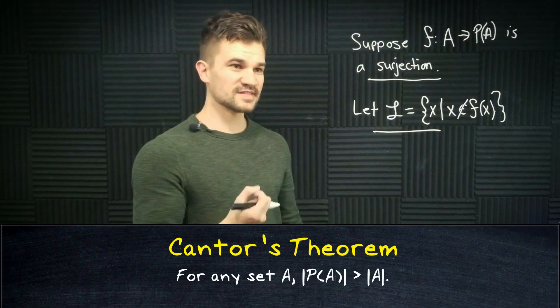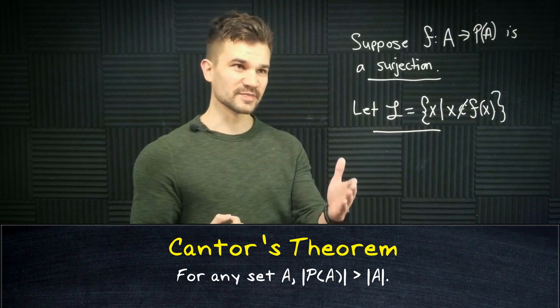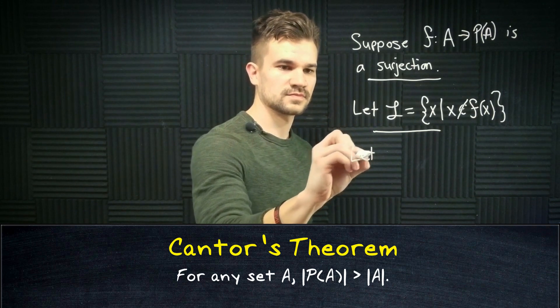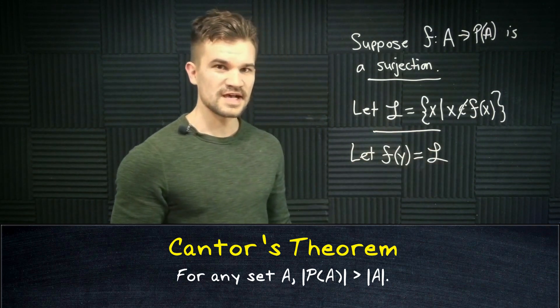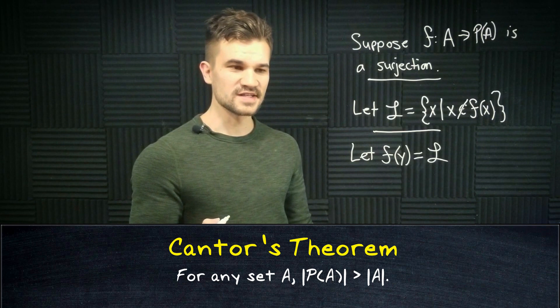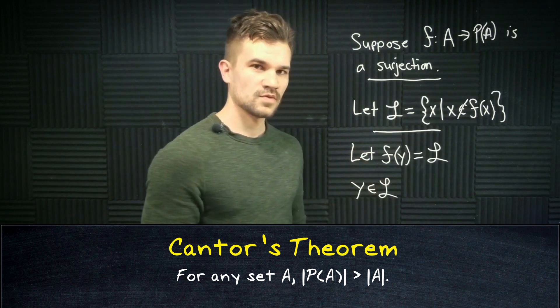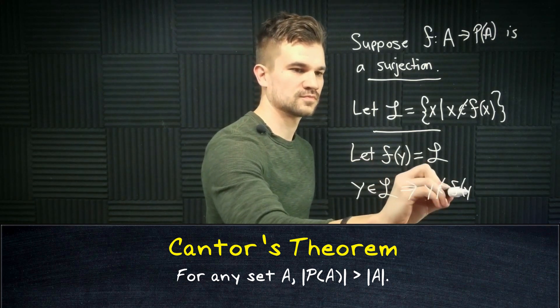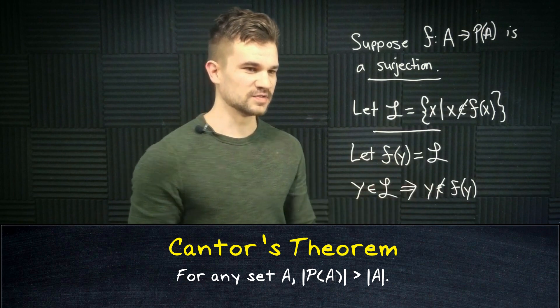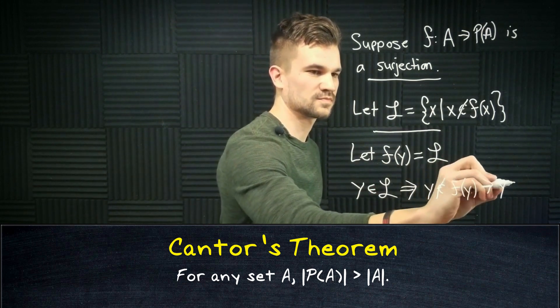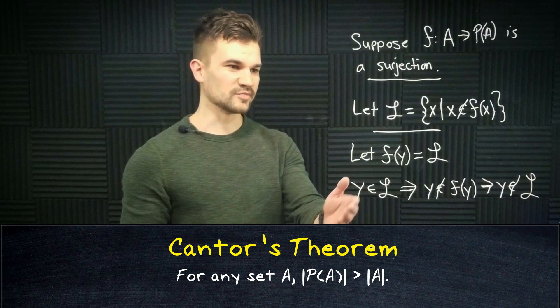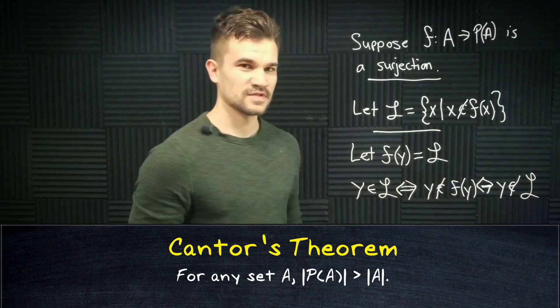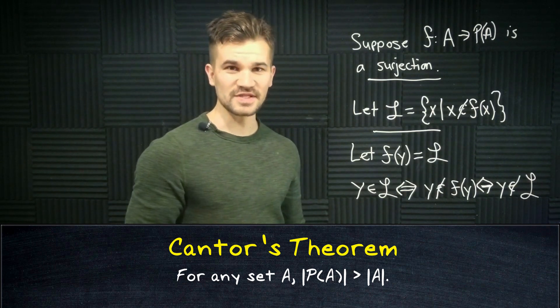Here's the contradiction. Since F is surjective that means that there is some element of A that maps to L. Let's call it Y. Now let's suppose Y is in L. Well then that would mean that Y is not in L. So Y is in L implies Y is not in L. And this is by the way a biconditional throughout. So there's our contradiction. So in fact F cannot be a surjection.